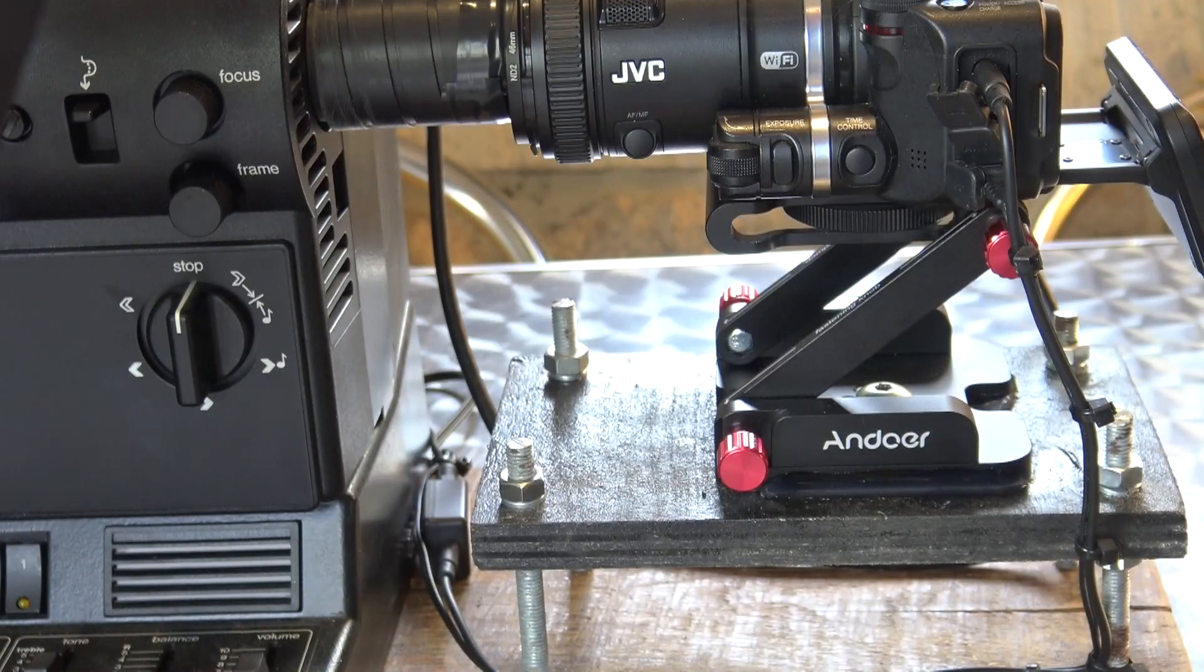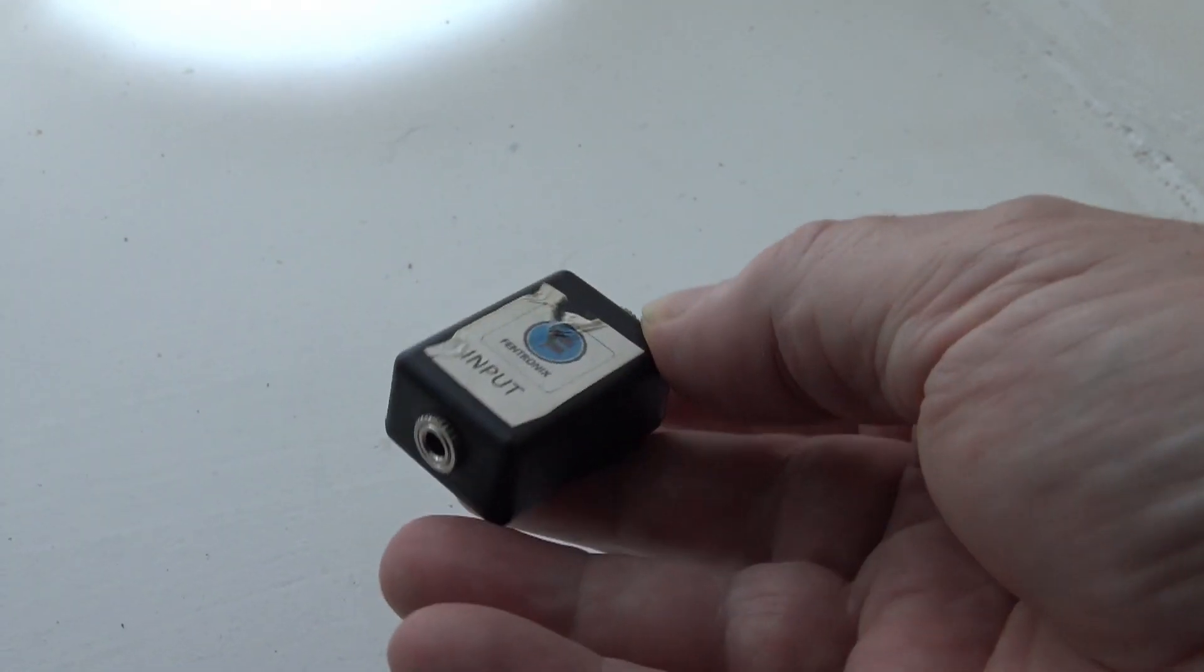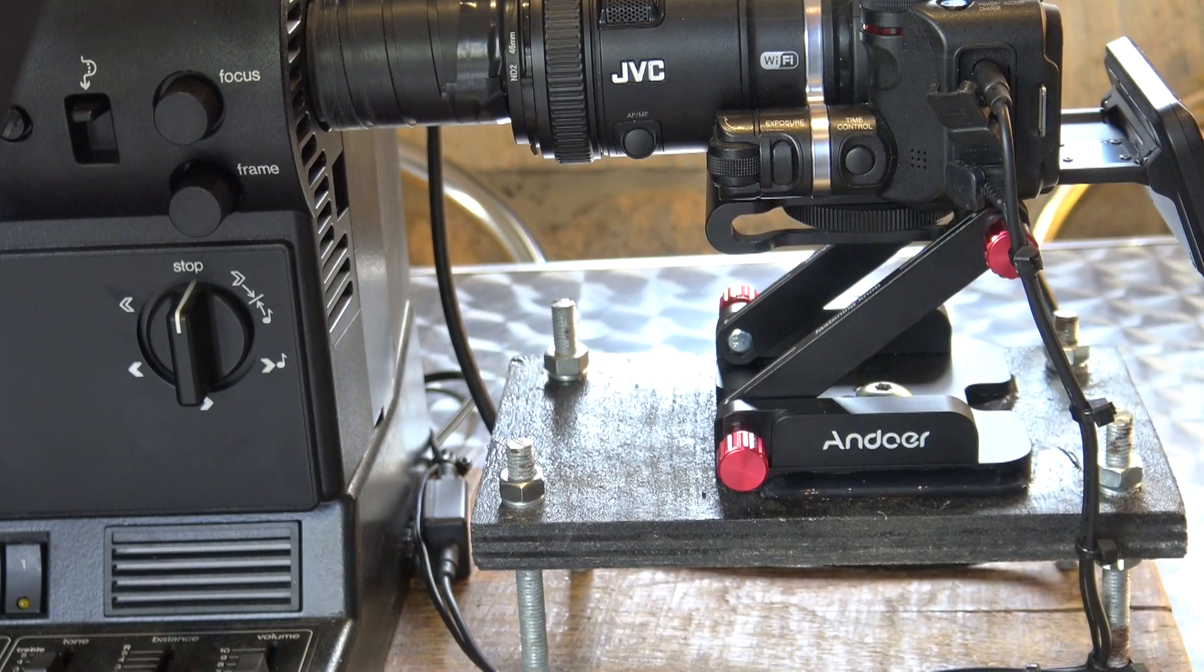The audio input on the camera is mic level. I bought a small transformer here from eBay for about 12 euros, which equalizes the signal from line to mic.